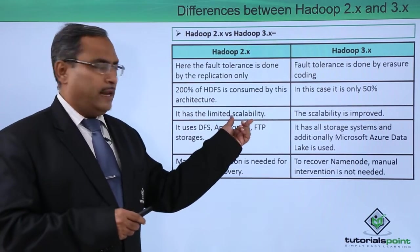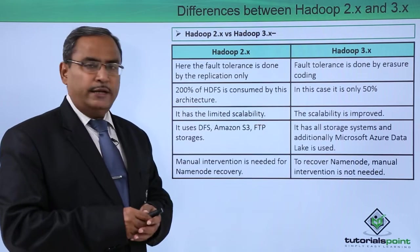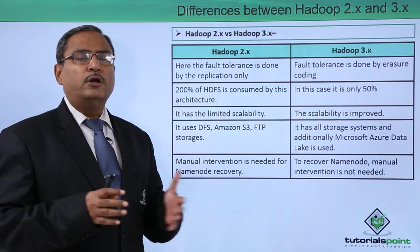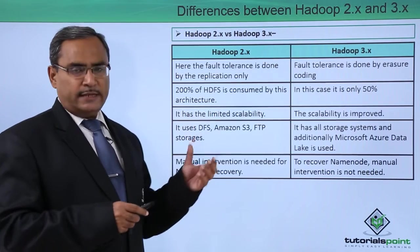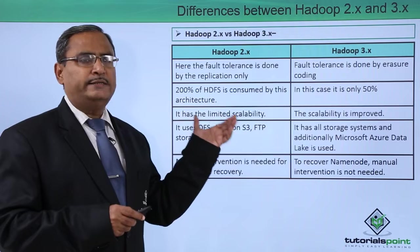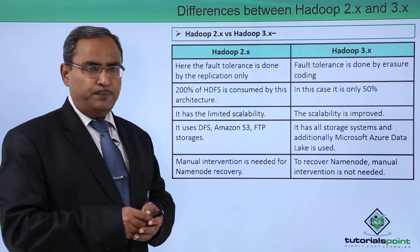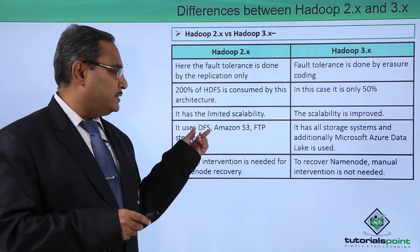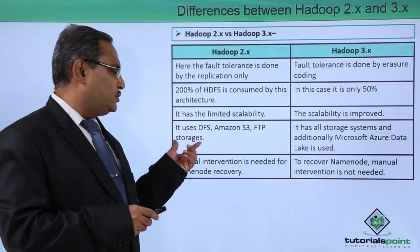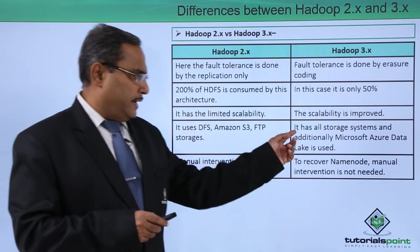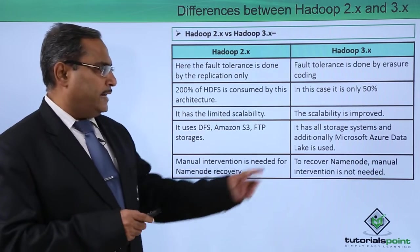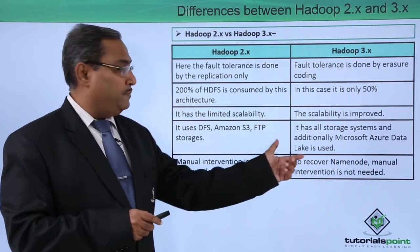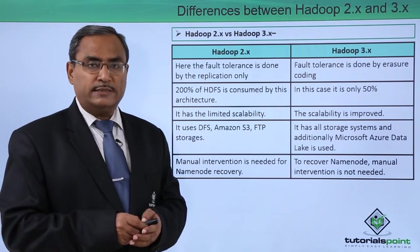Hadoop 2.x has limited scalability, but scalability is improved in 3.x — for load balancing we can go for horizontal scaling. For storage, Hadoop 2.x uses DFS, Amazon S3, and FTP. Hadoop 3.x supports all those storage systems and additionally introduces Microsoft Azure Data Lake as a new storage option.